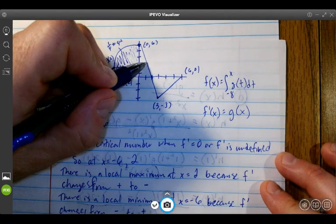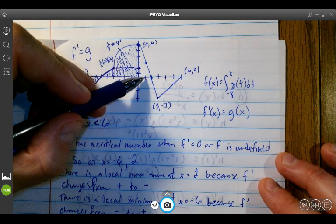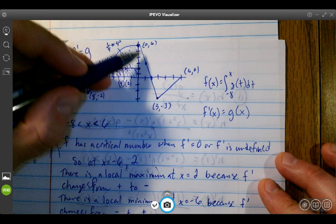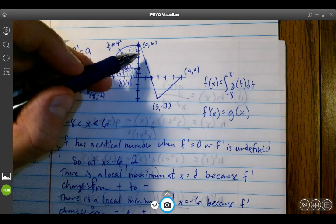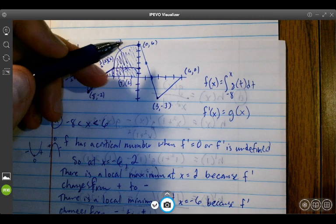g'(1) would mean the derivative of this graph at this point. So g'(1) would represent the slope of that line. The slope of that line, very simply, would be negative 3.